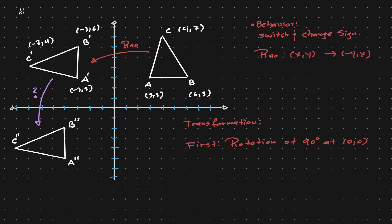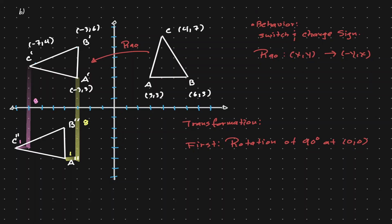To identify the second transformation, let's look at orientations. Notice that A' and A'' are at the bottom right-hand side. B' and B'' are on the upper right-hand side. C' and C'' are on the left-hand side. There is no change in orientation, which is an indicator that there is a translation. From A' to A'', notice that we are going 8 units down and 1 unit to the left. The movement from C' to C'' is also the same: 8 units down and 1 unit to the left. And that also occurs for B' to B'': 8 units down and 1 unit to the left.